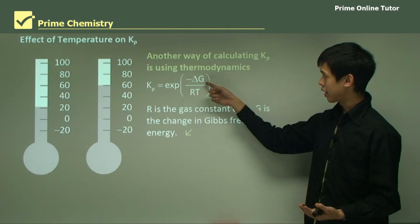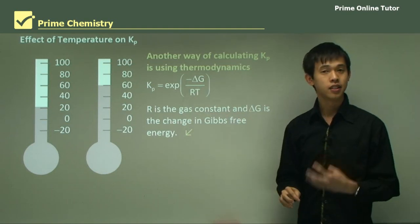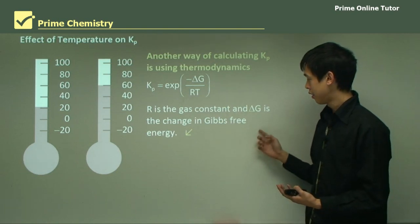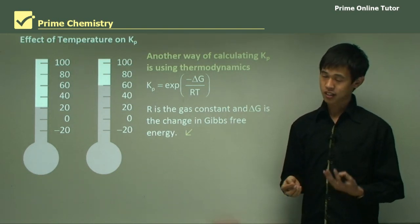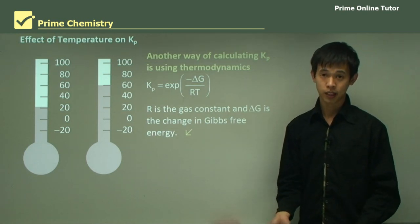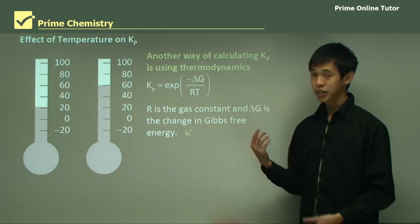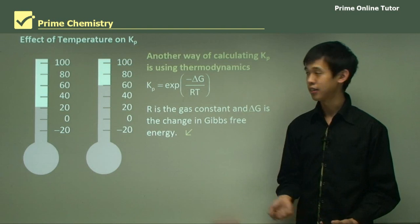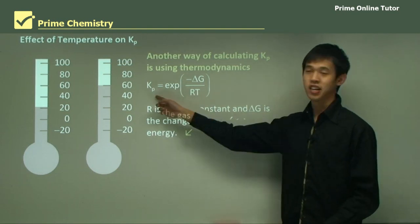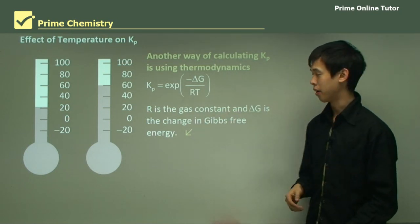And delta G is related to the chemical concentrations. Now delta G is just another number, it's just a property of the chemicals themselves. So the only thing that can change, really, is T. And so by changing T is the only way to change Kp.